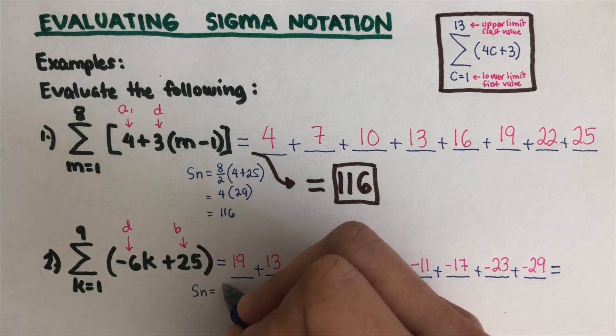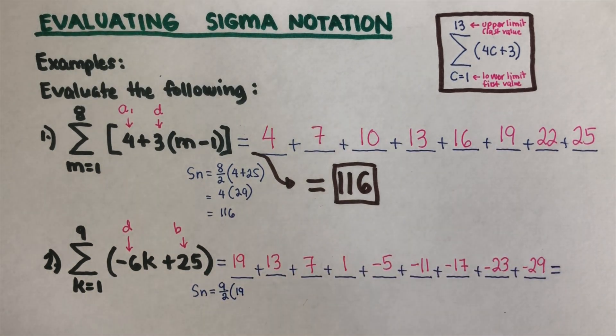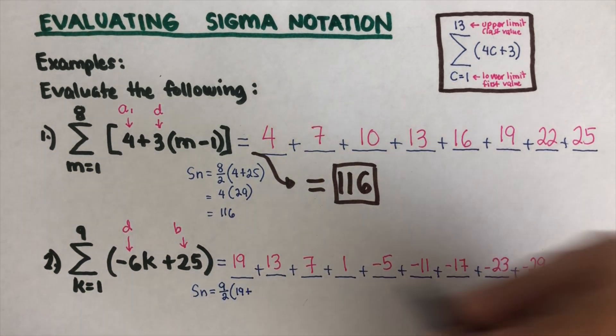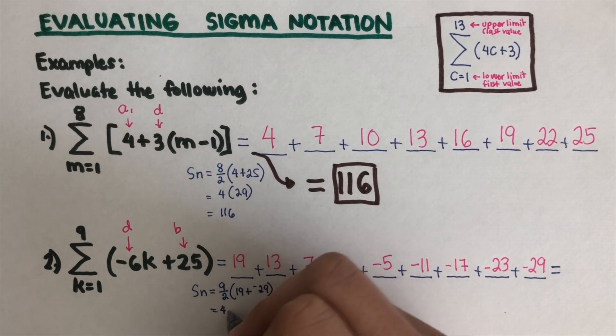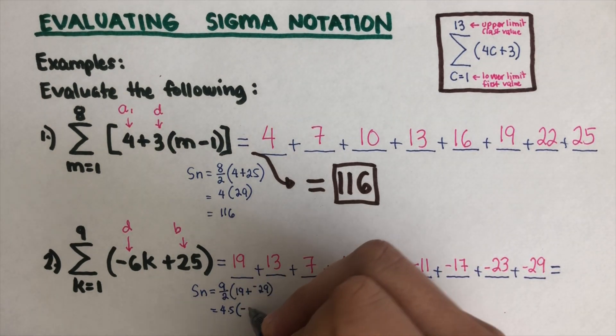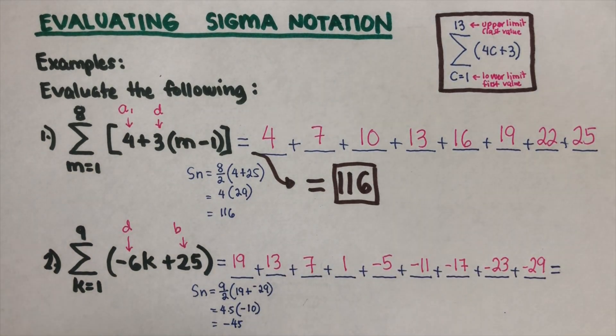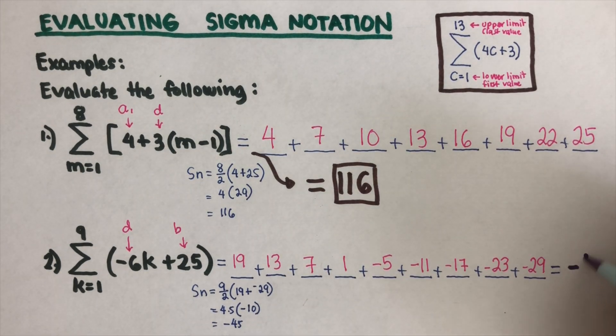9 divided by 2 times the first term, which is 19, plus the last term, which is negative 29. So that is 4.5 times negative 10, so then it is negative 45 as the answer. So we can go ahead and write this as negative 45.